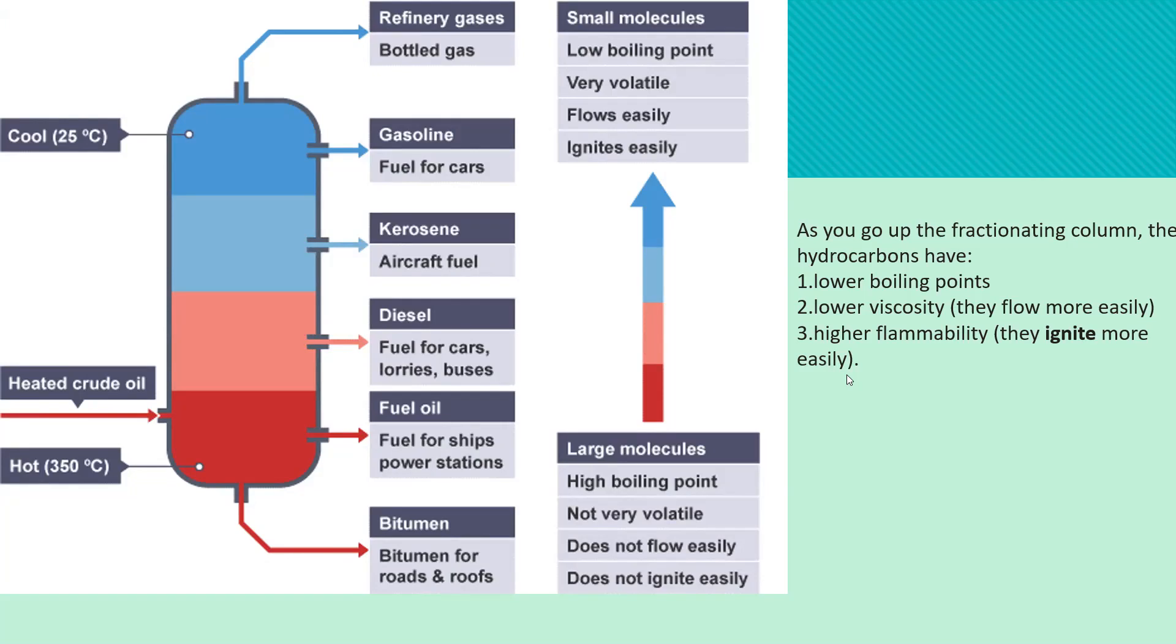Kerosene in the middle with diesel. Fuel oil, such as fuel for ships and power stations. And at the bottom, as you can see, is bitumen for roads and roofs.